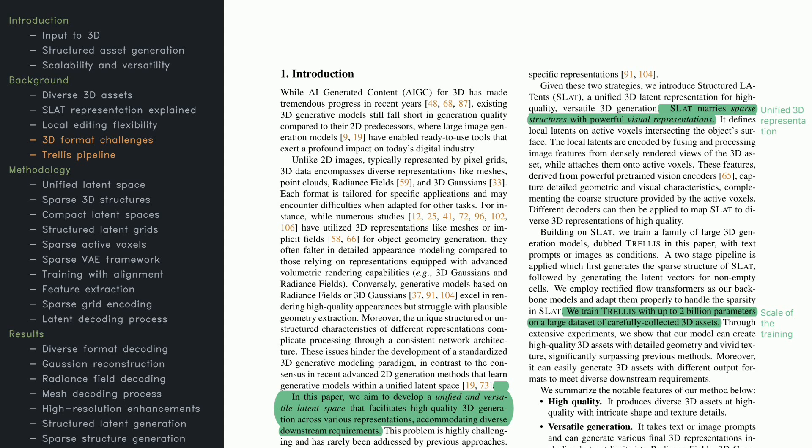So why is 3D generation more challenging than 2D? In 2D, grids are straightforward. But 3D data comes in formats like meshes, point clouds, radiance fields, and so on. Each format excels at certain tasks but can fall short in others. For example, mesh-based methods do well with geometry but often struggle with visual quality. Meanwhile, radiance fields look great when rendering views but can't easily extract geometry. The solution here is SLAT, a unified representation that merges sparse structures with dense visual details.